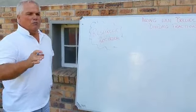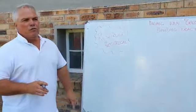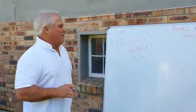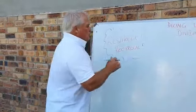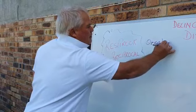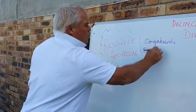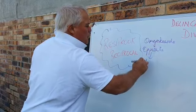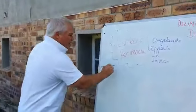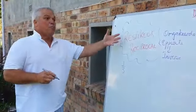So guys, I want you all on board. The first thing you're going to be confronted with is the principle of a reciprocal. What does that mean? In simple terms, it means the opposite - 'die omgekeerde.' Or a better English word will be the inverse. For example, if I say 1 third, what will its reciprocal be?